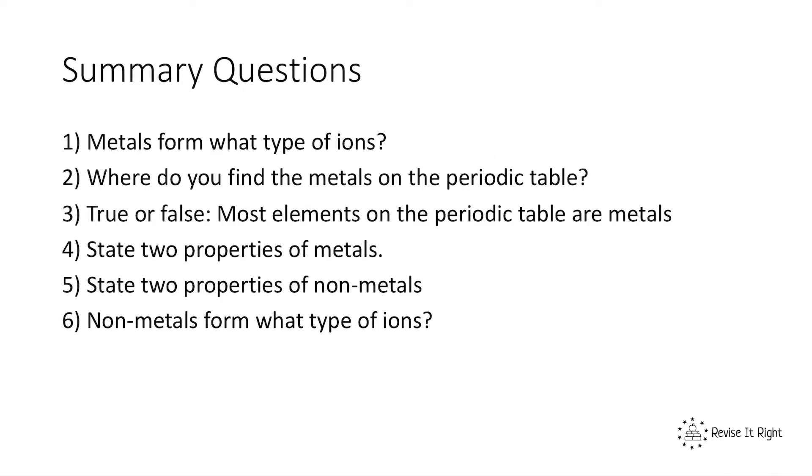Here are some summary questions. Metals form what type of ions? Metals form positive ions because they lose electrons, and electrons are negative. Where do you find metals on the periodic table? On the left.